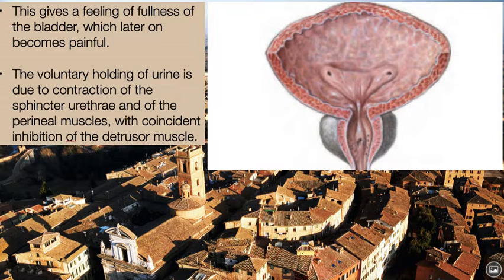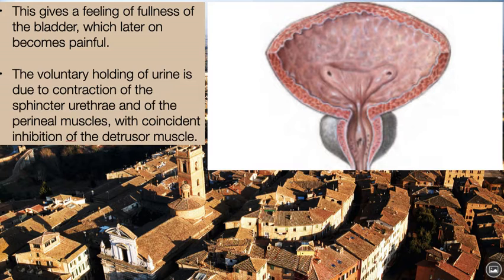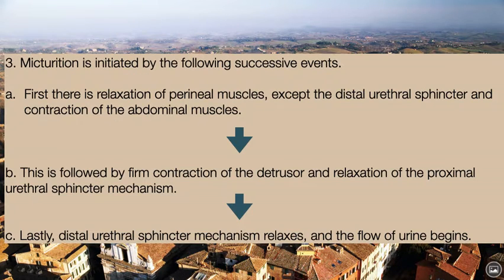This gives a feeling of fullness of the bladder, which may later become painful. Voluntary holding of urine is due to contraction of the sphincter urethrae and perineal muscles, with coincident inhibition of the detrusor muscles. Micturition is initiated by the following successive events: first, relaxation of the perineal muscles except the distal urethral sphincter, and contraction of the abdominal muscles; then firm contraction of the detrusor and relaxation of the proximal urethral sphincter mechanism; lastly, the distal urethral sphincter mechanism relaxes and urine flow begins.